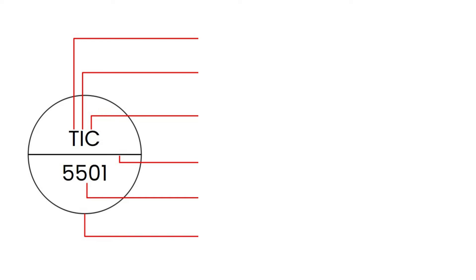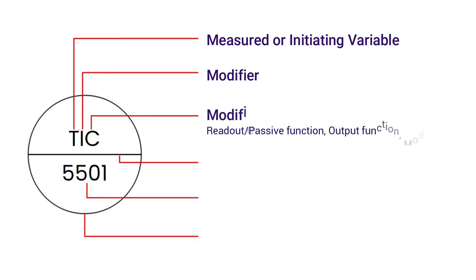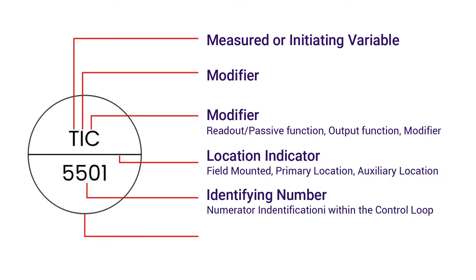Every instrumentation symbol available in the P&ID diagram is like this symbol. First letter indicates measured or initiating variable. Second letter indicates a modifier, it means it looks like an indicator. Third letter indicates a modifier. In this case, it is a controller that is used to provide a manipulated value to the output device. This line indicates instrument location. Identifying number indicates the loop number of the control system. Instrument symbols indicate whether the instrument is used for indication purpose or for interlocking function.